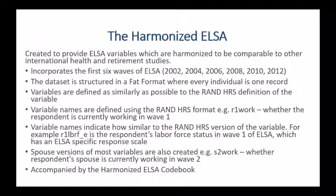The harmonized ELSA currently incorporates the first six waves of ELSA, starting in 2002 all the way through wave 6 in 2012. We will be incorporating wave 7 over the next couple of months as that data was just released. The dataset is structured in a FAT format — in the original ELSA data you get one dataset for every wave, but the harmonized ELSA is just one dataset where every individual is one record, and the different wave reports are listed out using a variable name convention.